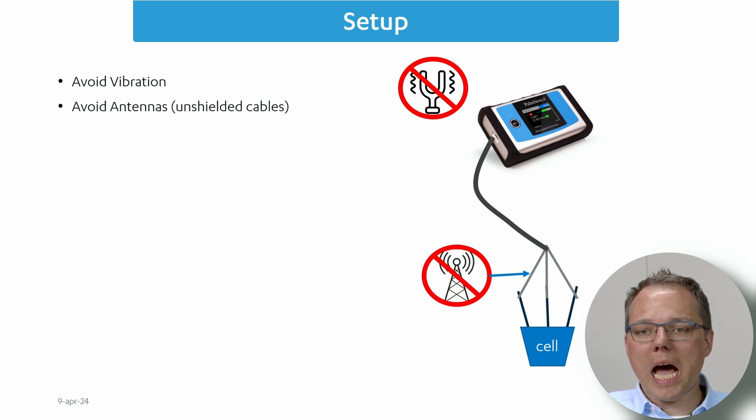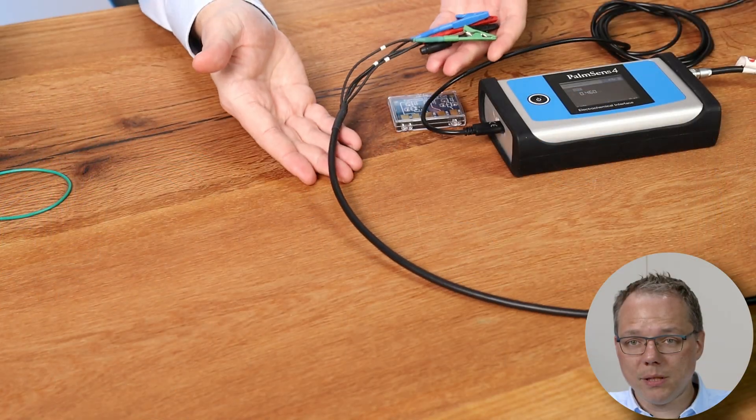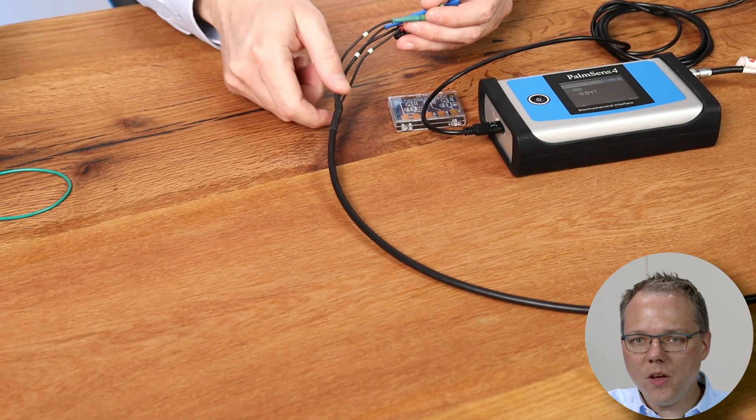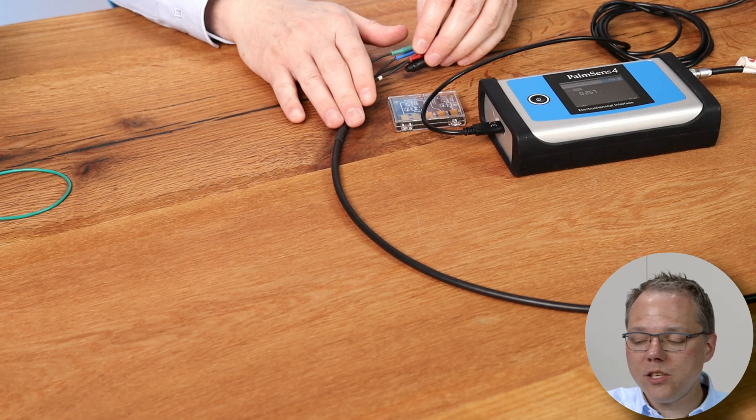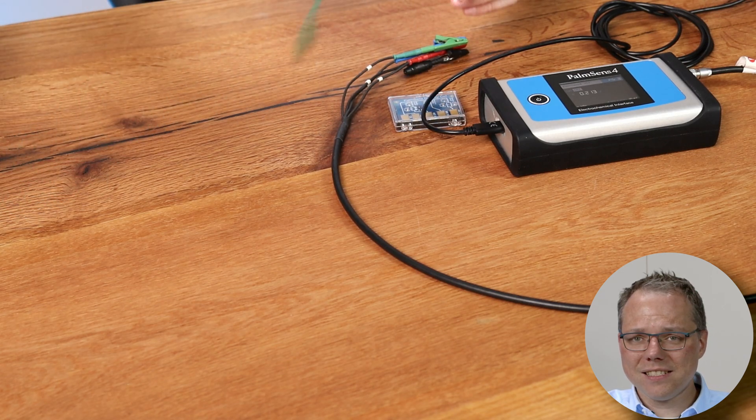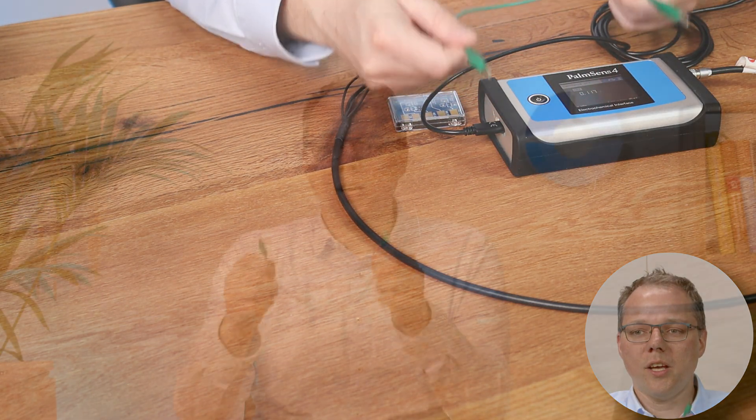Other things you should avoid are antennas and that sounds a bit weird. Well actually every unshielded cable that you use is an antenna. Our Palmsense potentiostats come with these double shielded cables. Each of these leads are shielded and then the whole bundle is shielded again and we do that because unshielded cables are antennas - they collect all the electric fields from your environment so that's not good.